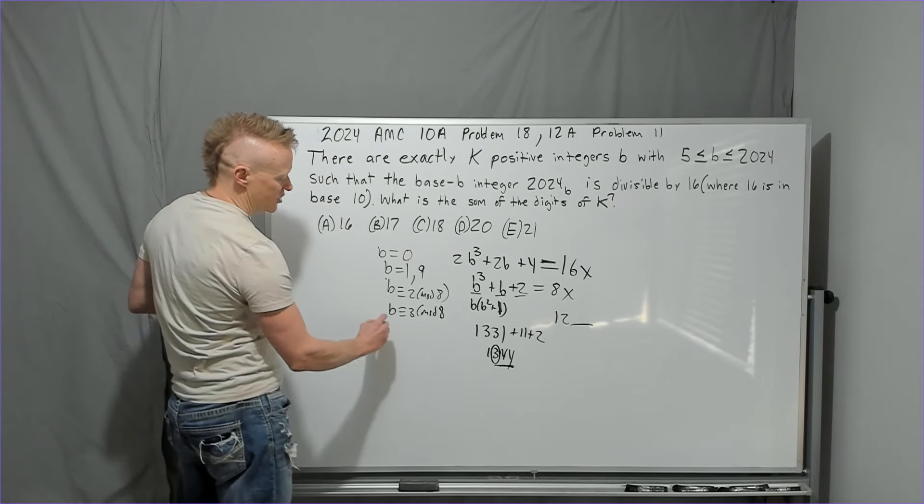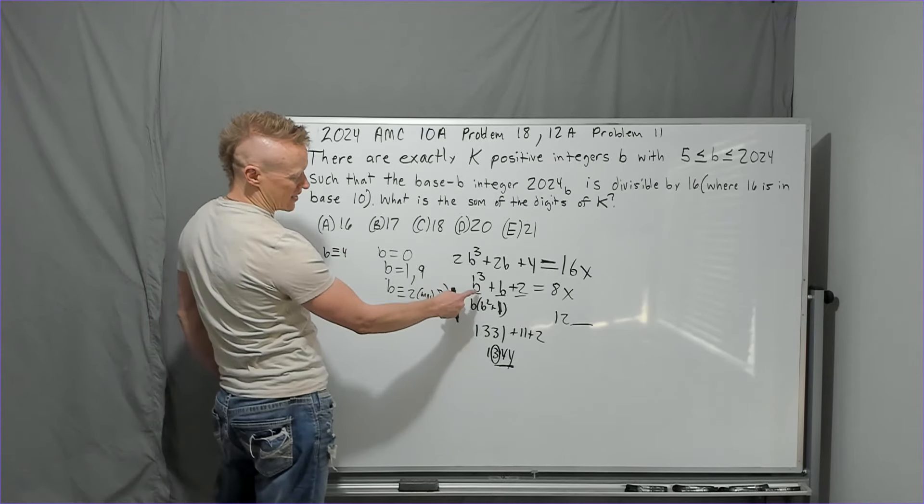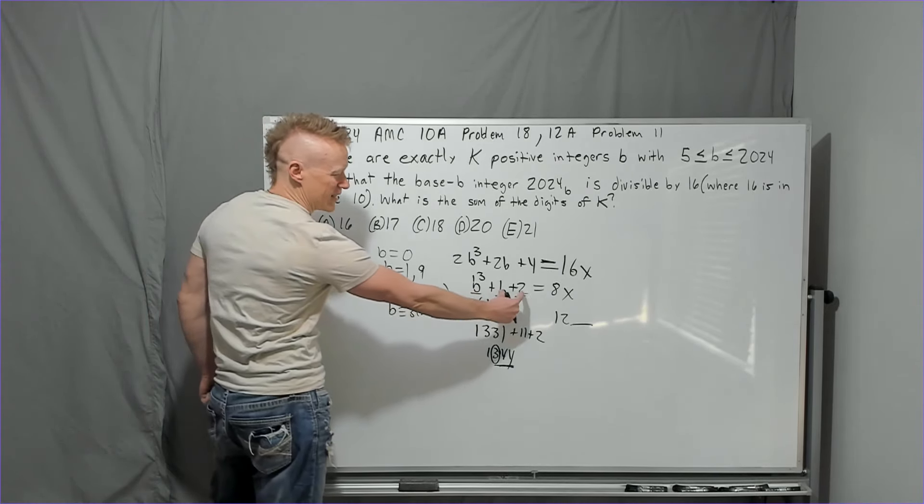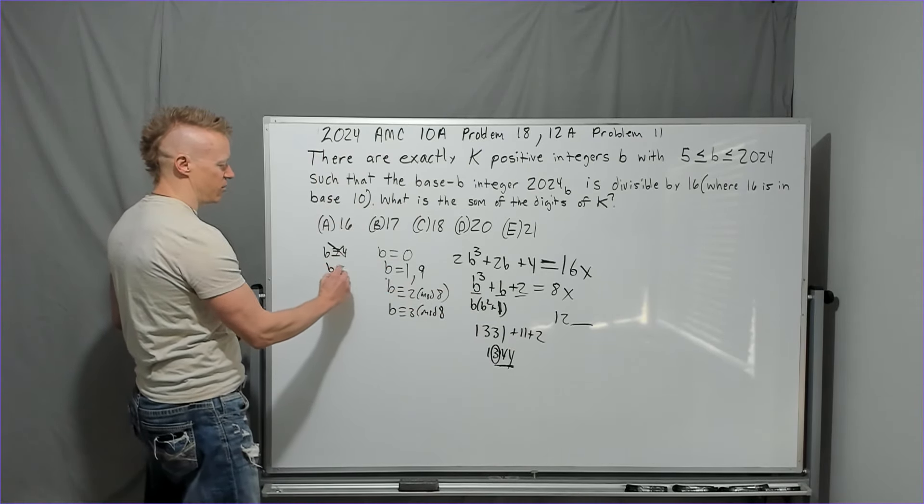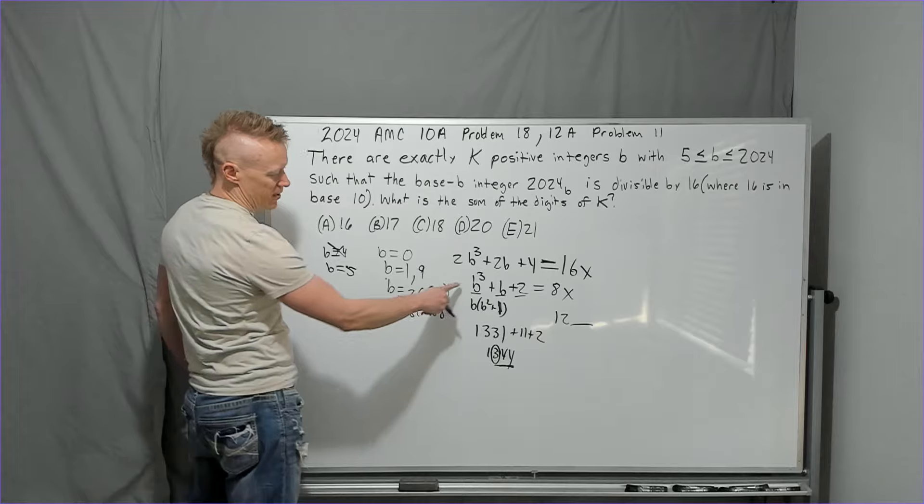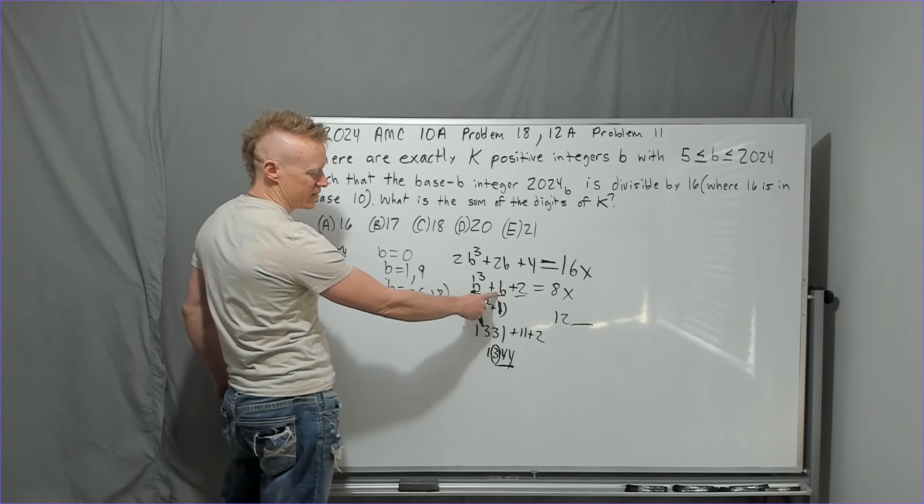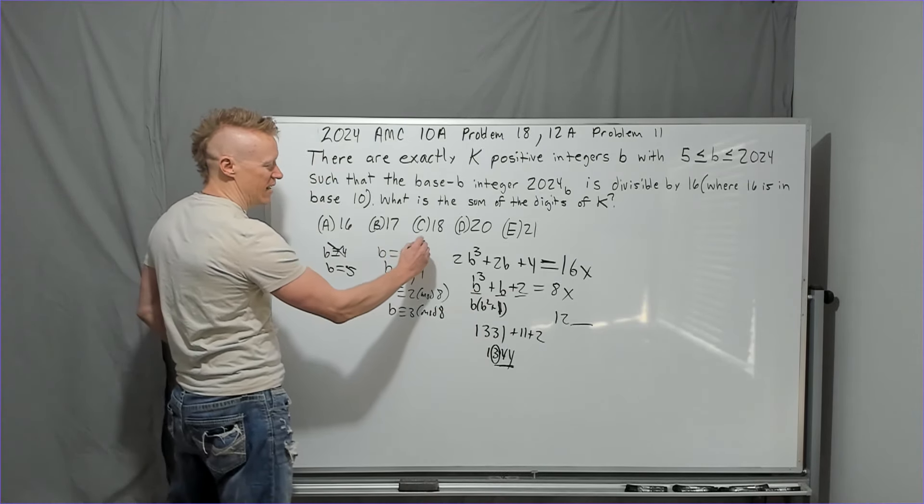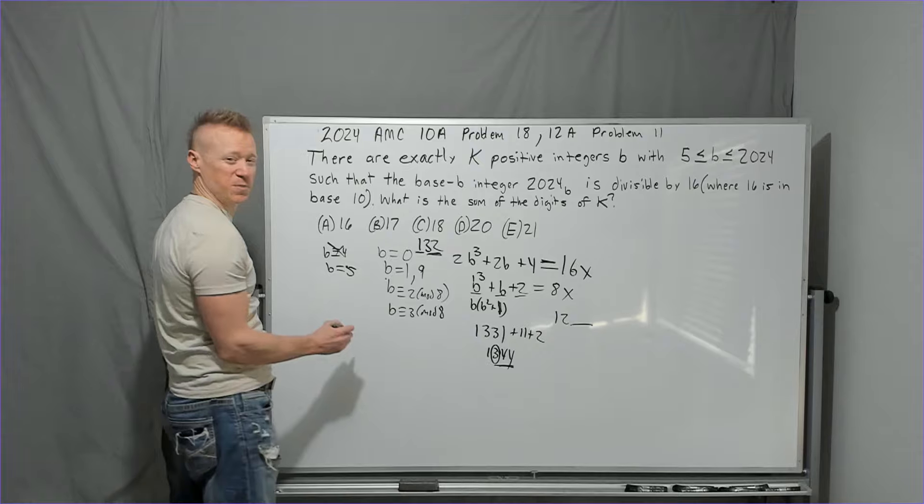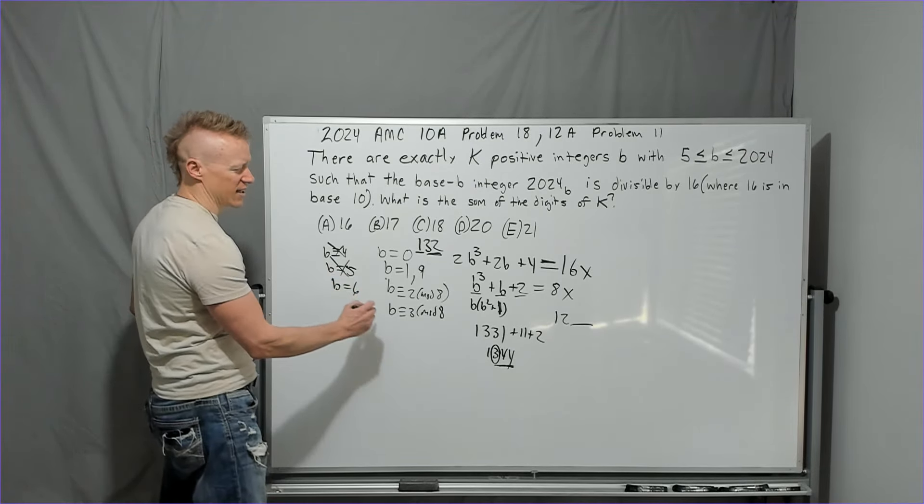So then what? Let's check when B is congruent to 4 mod 8. If that's the case, this is 64, a multiple of 8, and that's 6, not a multiple of 8. So that doesn't work. Let's check when B is 5. If I plug in 5, you're going to get 125 plus 5, which is 130, plus 2, 132. Again, odd number. Then I don't want a multiple of 8 here, and I have one, so 5's not going to work.